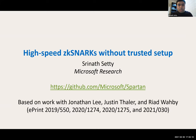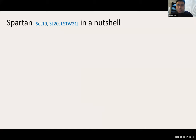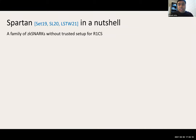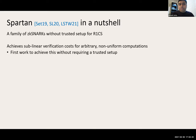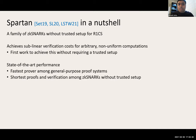Before I dive deep into Spartan, I'm going to highlight a few distinguishing aspects. First, it's a family of ZK-SNARKs without trusted setup for R1CS. It achieves sublinear verification costs for arbitrary non-uniform computations, and it's the first work to achieve that property. It also features the fastest prover among general purpose proof systems, and provides the shortest proofs and verification among ZK-SNARKs without trusted setup.